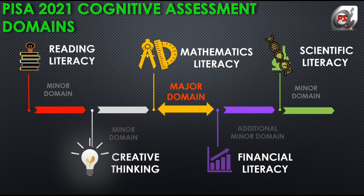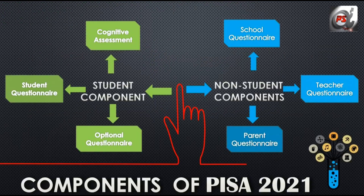This assessment has a total of five domains: reading literacy, mathematics literacy, scientific literacy, creative thinking, and financial literacy. Out of these five domains, mathematics literacy is a major domain and the others are minors. Reading, mathematics and science — these three are the main core domains. Whereas creative thinking is an innovative domain and financial literacy is an additional one which will be discussed in an upcoming video.